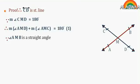And since measure of angle AMB is a straight angle, therefore measure of angle AMC plus measure of angle CMB equals 180. (2)